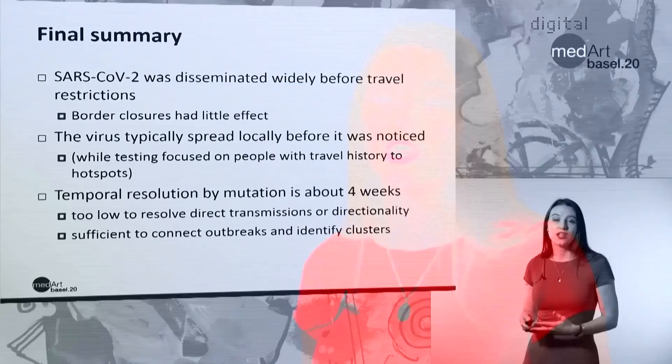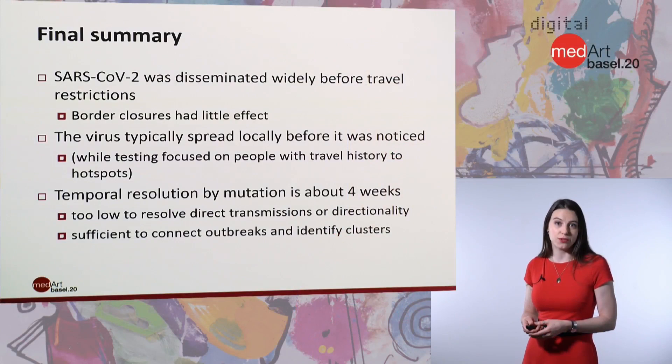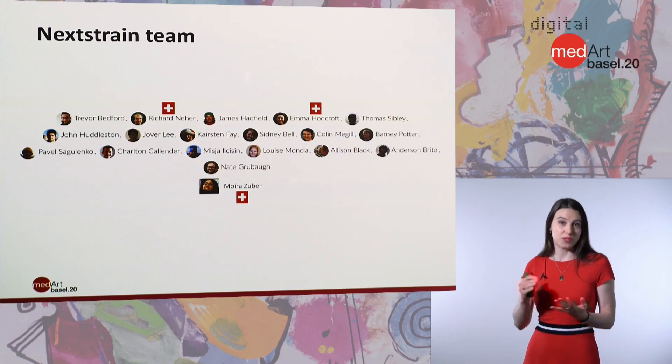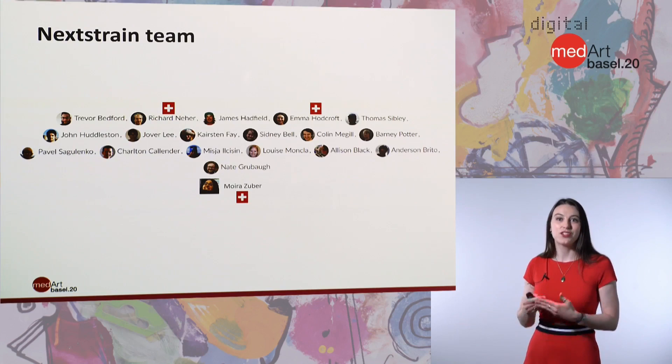I'd love to say we could tell some really interesting things about the Swiss outbreak from the genetic data, but unfortunately we only have about 70 sequences from Switzerland at the moment, so we can't say much. I'm hopeful that in the future we will be able to get more sequences from Switzerland. I'd like to thank all of the Nextstrain team — between our groups here in Europe, in Seattle and in New Zealand, we literally work on Nextstrain 24 hours a day. On the Swiss team here in Europe, we have Richard Nair, myself, and a student worker, Moirad Zuber. I'd like to thank you all for your attention, and Richard Nair will be happy to take your questions during the discussion.